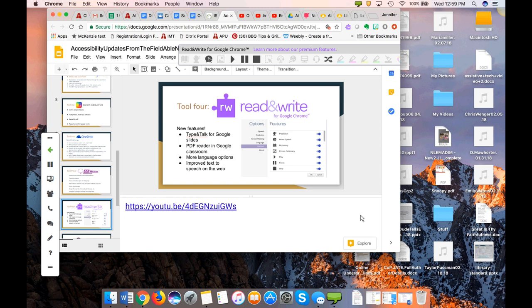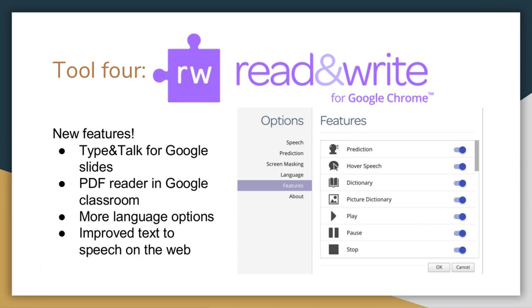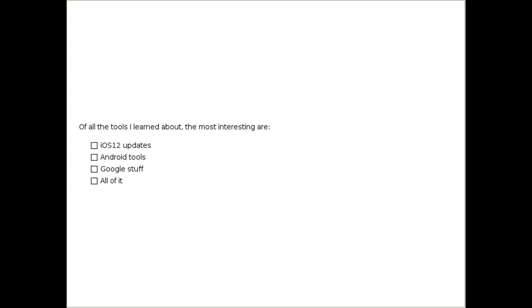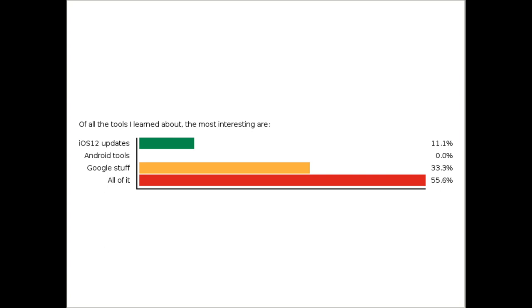Those are some of the new things in Read and Write. It's amazing what they've done, especially the integration with Google Classroom. Now we have a quick poll: of all the tools learned about today, which is most interesting — iOS 12, Android/Google stuff, or all of it? This helps guide our future presentations.